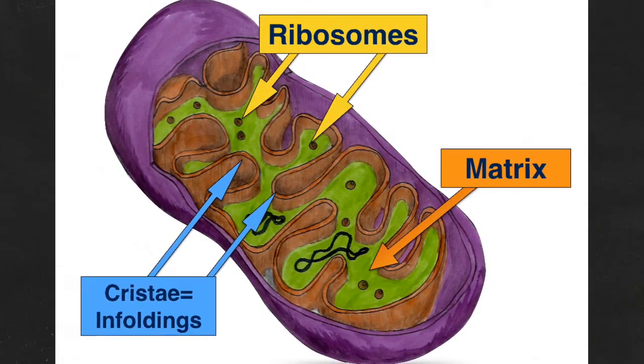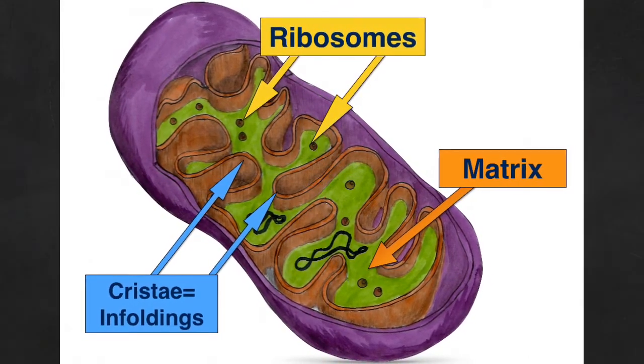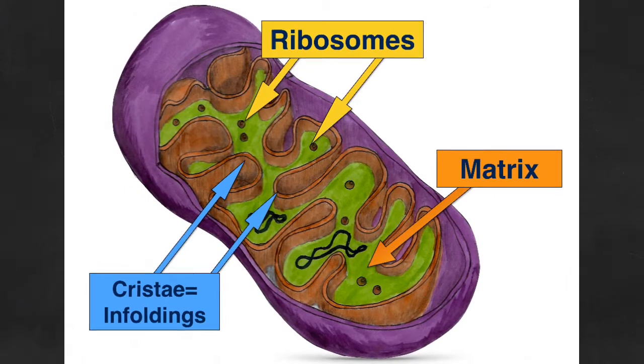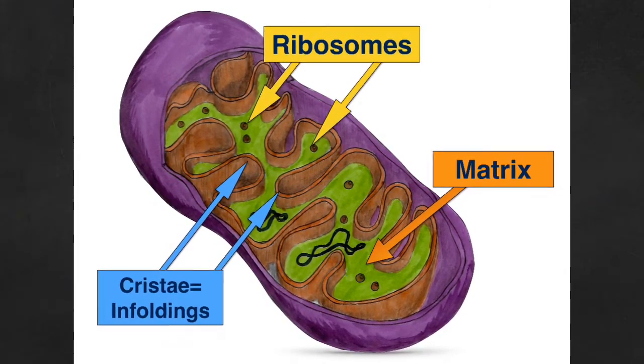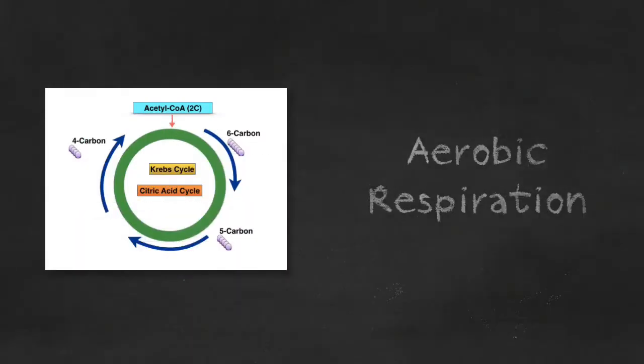If you were to look inside a mitochondrion, you would see many ribosomes. You would see ribosomes in the matrix of the mitochondrion and also embedded in the membranes of those cristae, those infoldings. Well, there must be a reason for all those ribosomes. There is. Aerobic respiration takes place in the mitochondria and this process involves so many enzymes.